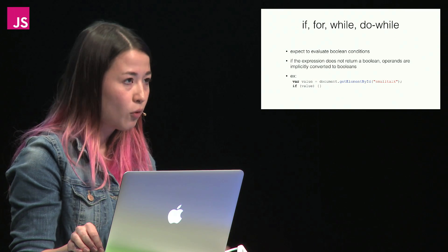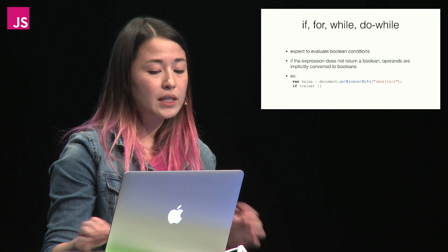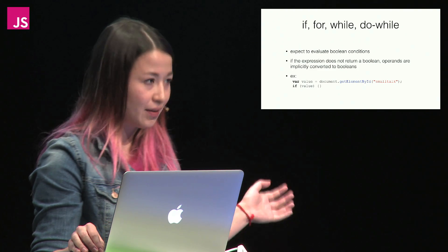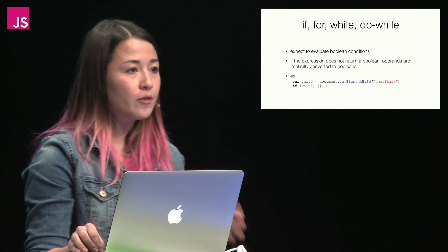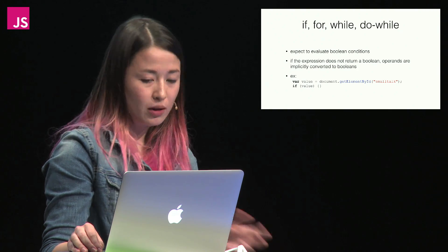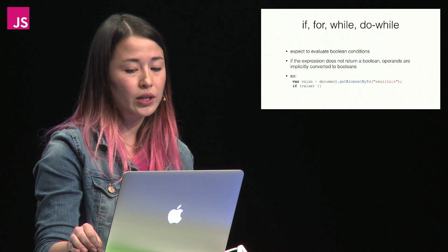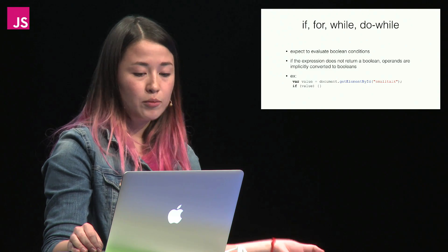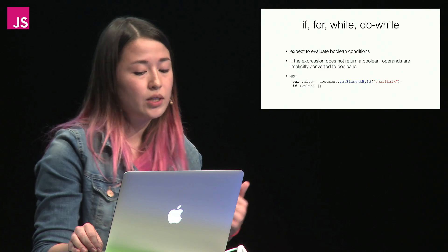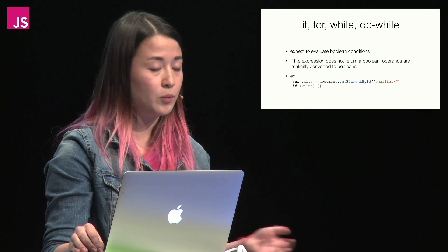The conditional statements if, for, while, and do-while all expect to evaluate Boolean conditions. If the expression does not return a Boolean, its operands are implicitly converted to Booleans using the guidelines we defined earlier. For example, var value equals document.getElementById('small-talk'). getElementById will either return an object if it finds the element, or null. If an object is returned, the if statement will implicitly convert it to true; if null is returned, it will implicitly convert it to false.